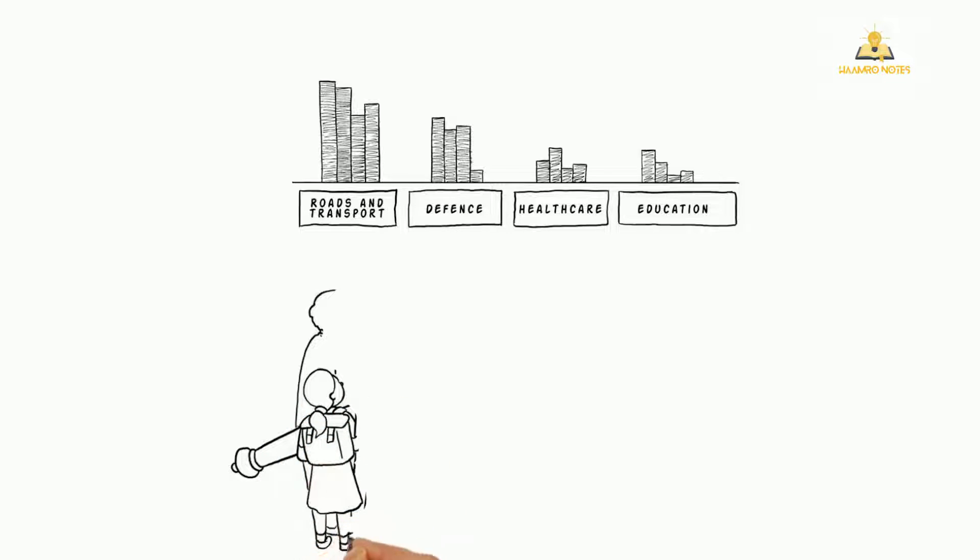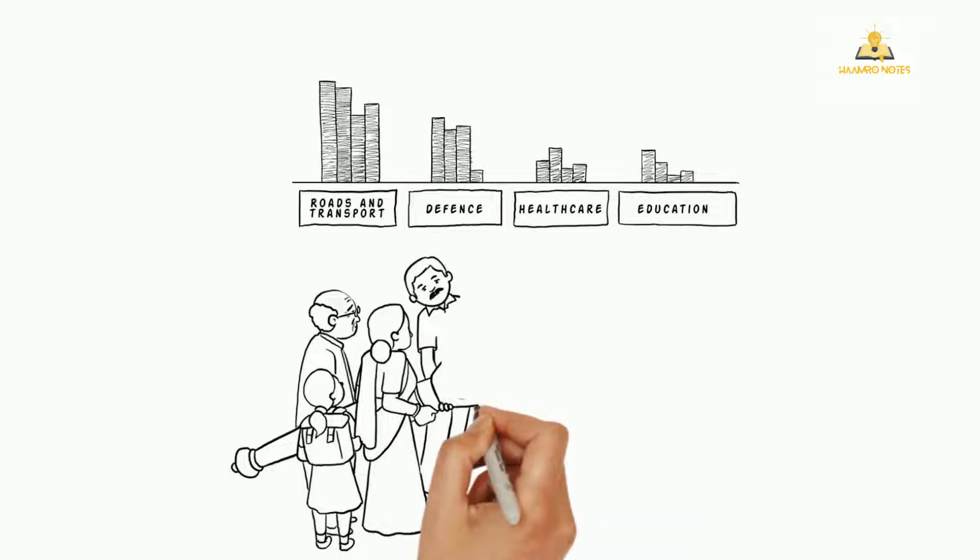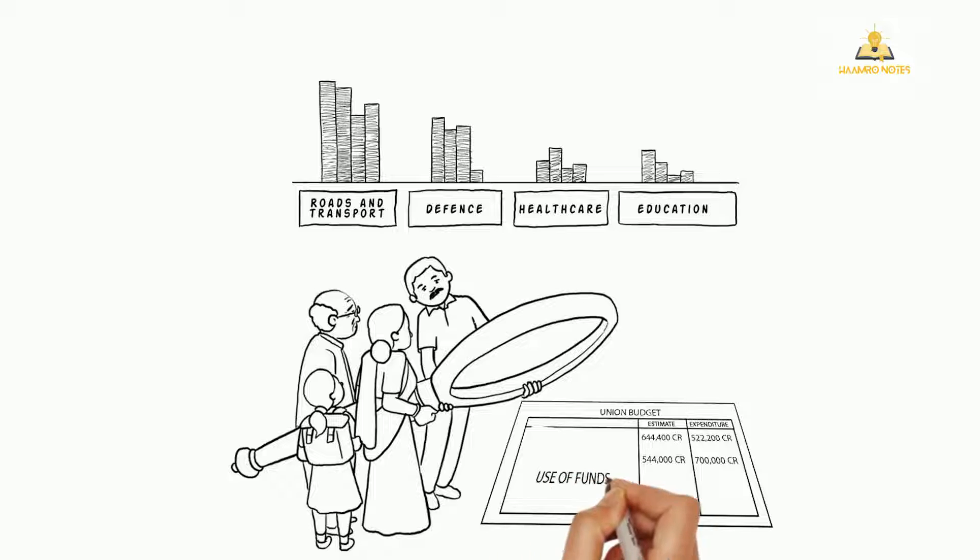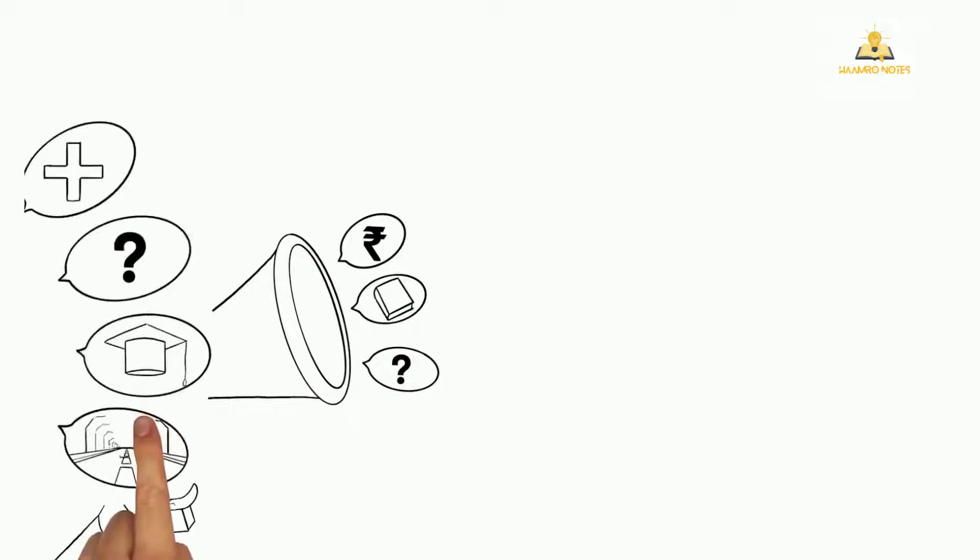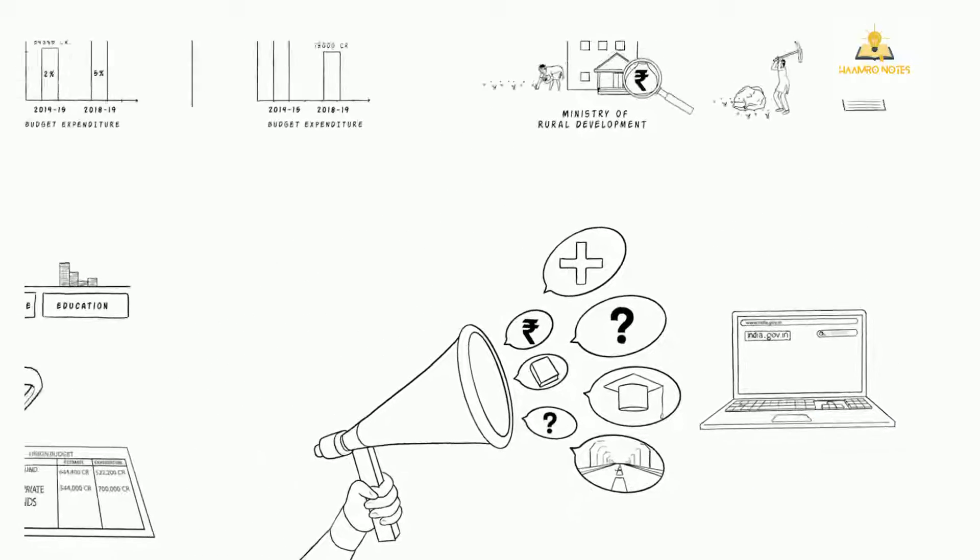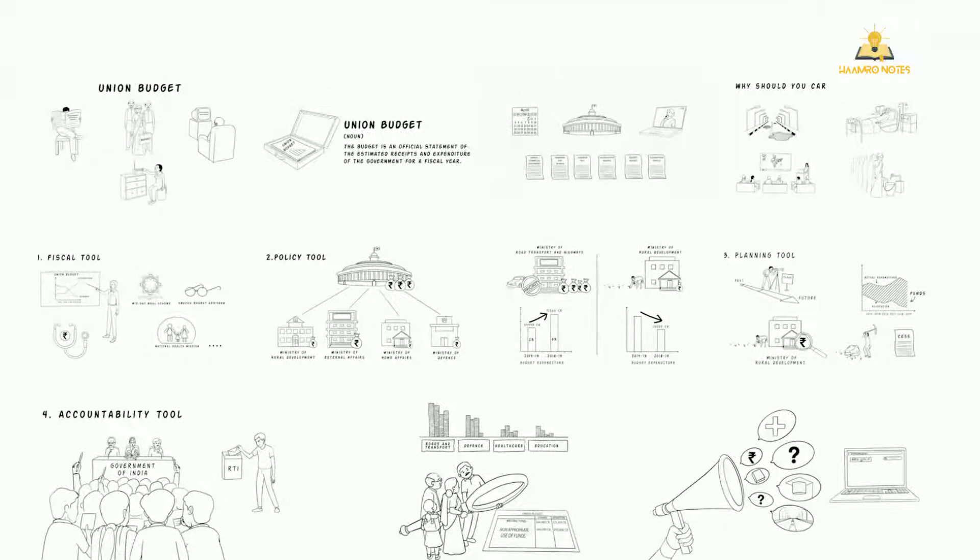This way, you can hold the centre and the states accountable for non-appropriate use of the funds, demand answers for missing funds, and most importantly, force every level to be on track to improve the welfare of its citizens. Our voice and our questions can drive the government to improve public services, and the budget forms a framework to monitor government expenditure. It is complicated, but if you are intrigued,